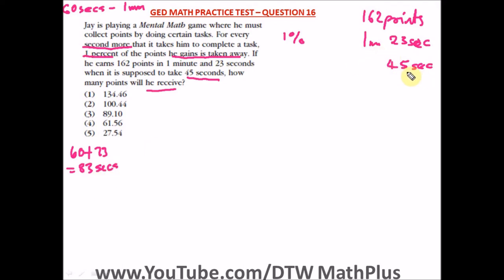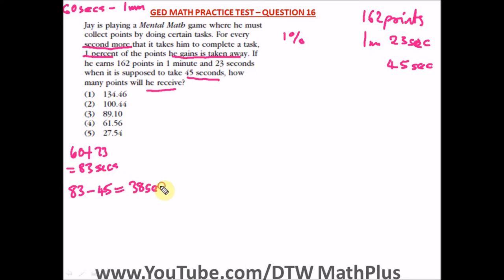He was supposed to complete the task in 45 seconds. So let's find the extra seconds he took. The question says for every second more that it takes him to complete the task, 1% of the points he gains is taken away. To find the extra seconds: 83 minus 45 gives us 38 seconds. So it took him 38 seconds more to complete the task.